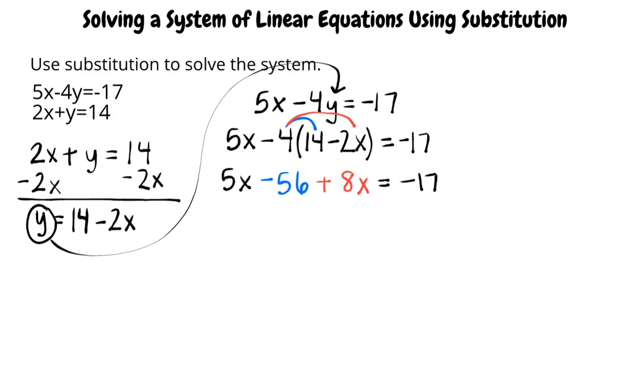Distributing negative 4 to 14 and to negative 2x, we write 5x minus 56 plus 8x equals negative 17.